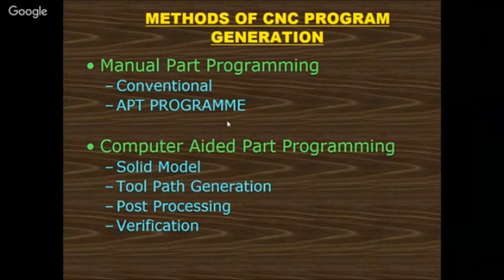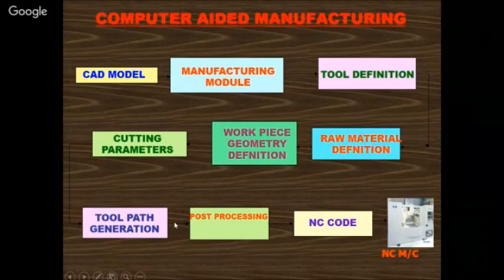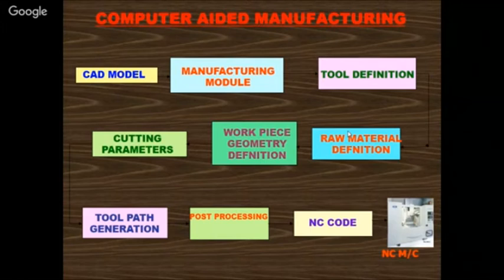VeriCut is software with huge demand for viewing tool path generation. Post-processing: the tool path generation file is a CLS (Cutter Location Specification) file; conversion of this CLS data to G-codes is called post-processing. The main aim of post-processing is to convert the tool path generation file into G-codes and M-codes, because the machine cannot read the CLS file directly — it only understands G-codes and M-codes. The CAM flowchart: CAD model → manufacturing model → tool definition → raw material definition → workpiece geometry definition → cutting parameters → tool path generation → post-processing → NC code (G-code and M-code).